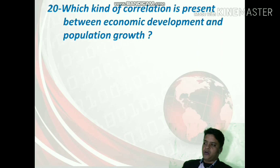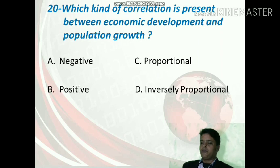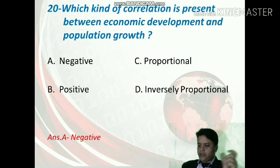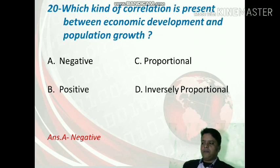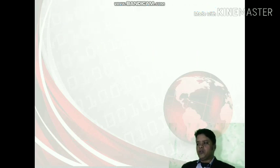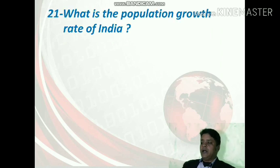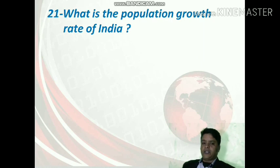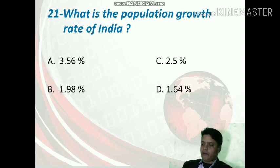Which kind of correlation is present between economic development and population growth? The options are negative, proportional, positive, or inversely proportional. The correct answer is negative — there is a negative/inverse relationship. If population increases, development decreases; if population decreases, development can grow faster.